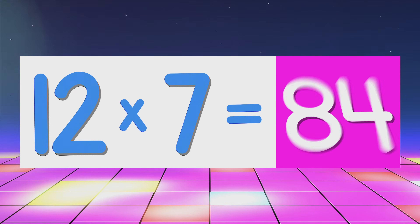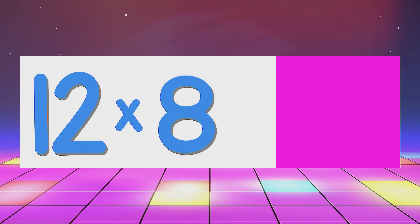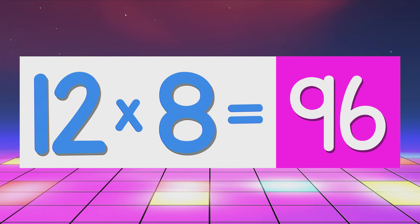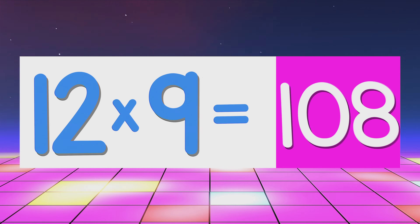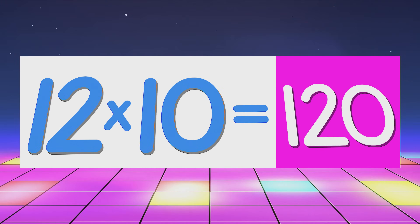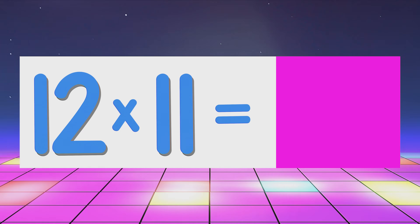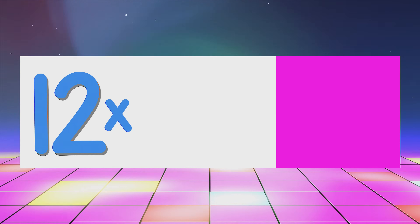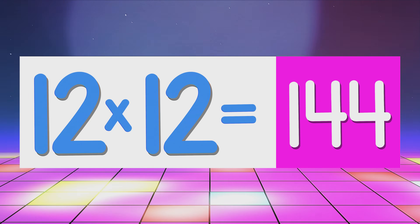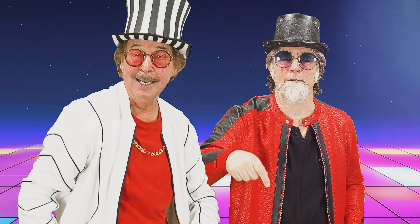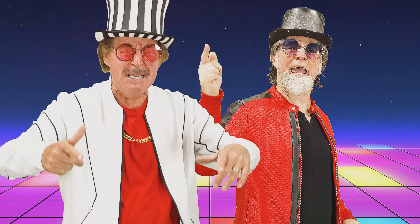12 times 7 is 84. 12 times 8 is 96. 12 times 9 is 108. How many inside? It's number 12, you multiply.